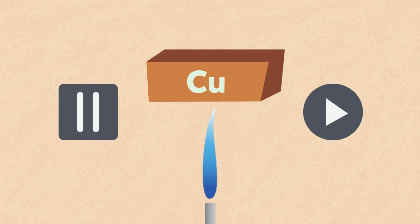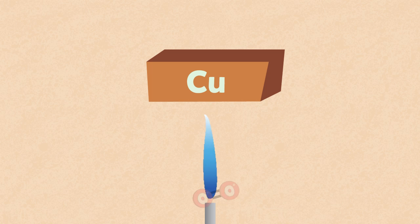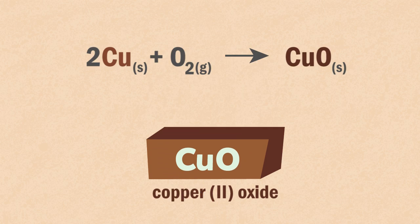Pause the video and continue when you are ready to check your answer. On heating copper with oxygen, the result is the formation of copper oxide, shown by this equation.